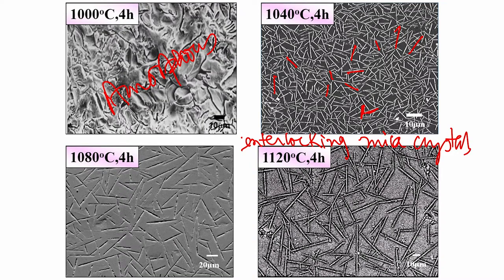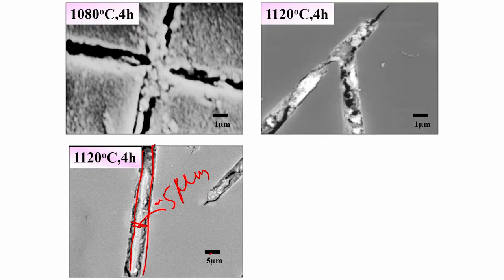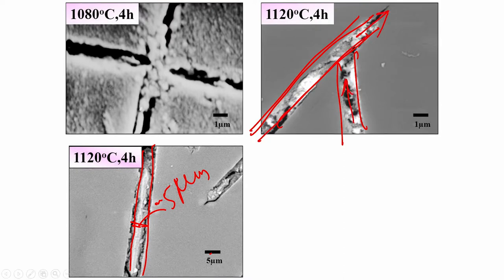Mica crystal plates can coarsen — the plate width increases with increasing heat treatment temperature while holding time remains the same. Typically the mica crystal width is around 5 microns. The interlocking microstructure is clearly visible in AFM images: one crystal grows in one direction, hits another growing crystal, and growth is stopped.